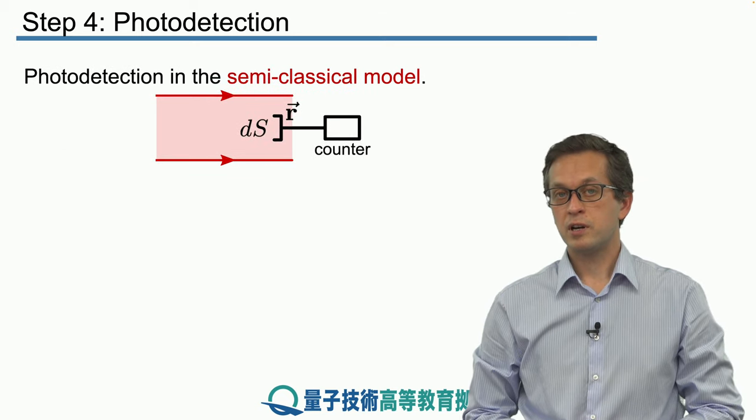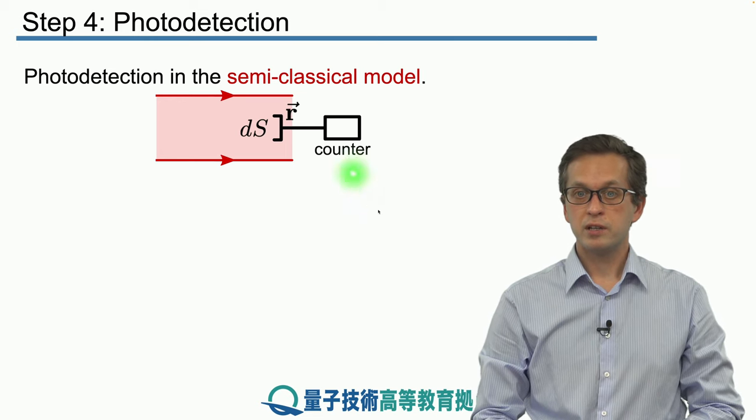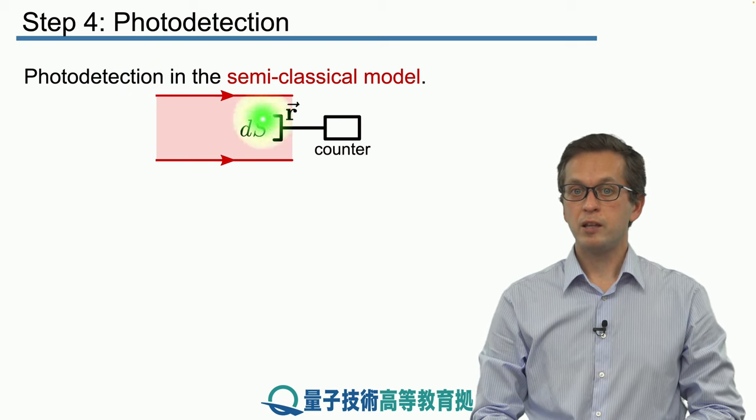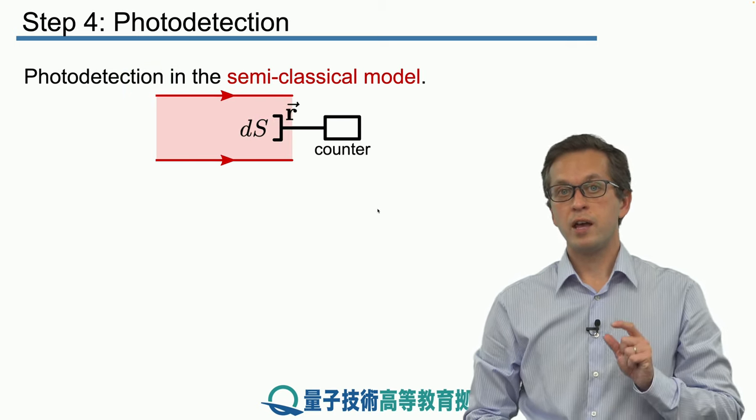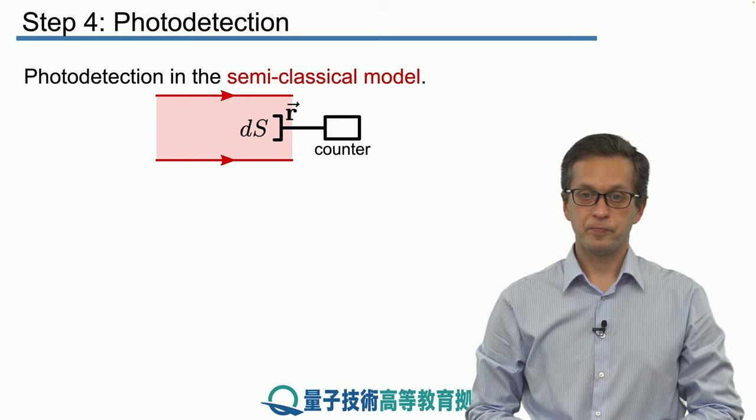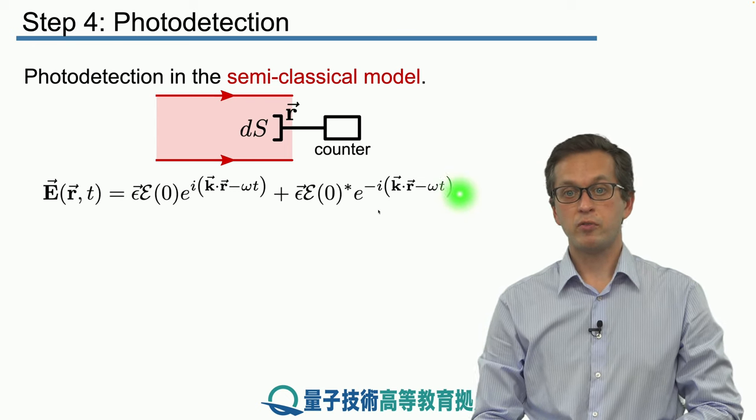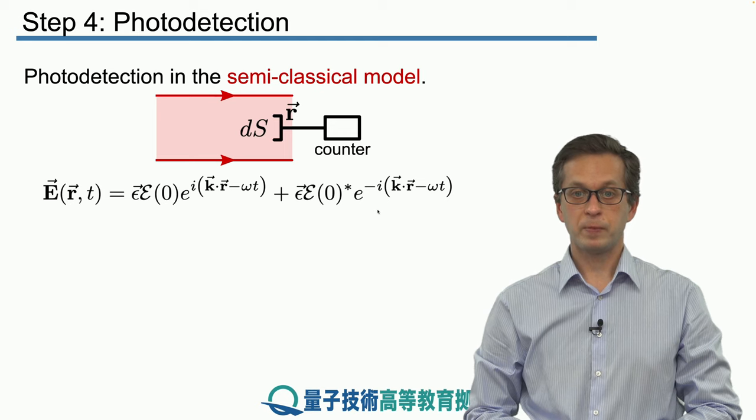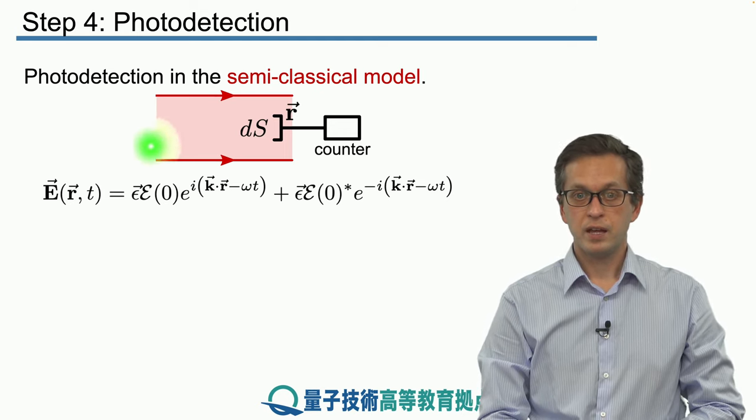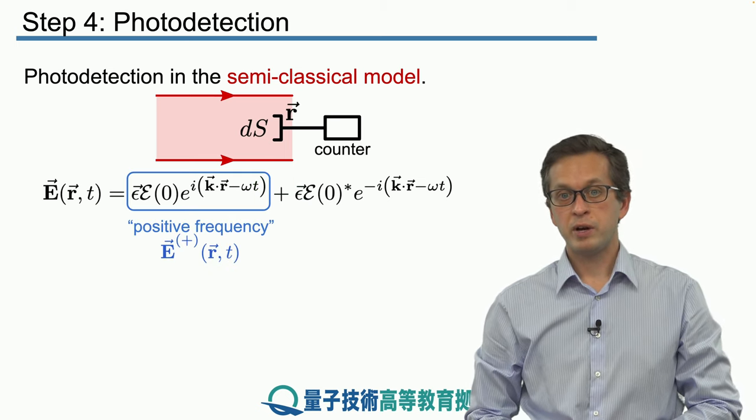So, now we're going to start with a semi-classical model for photo detection. We're going to consider our top hat model of a photon over here, and then we're going to have a detector of area dS located at position given by the vector r. And this is the description, the classical description of such a field, which we have seen many times before.